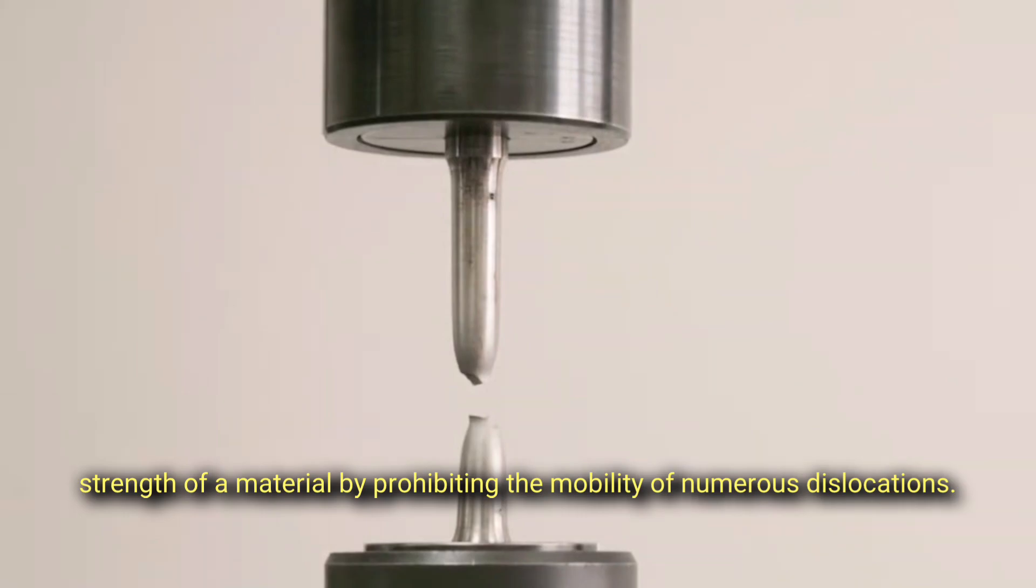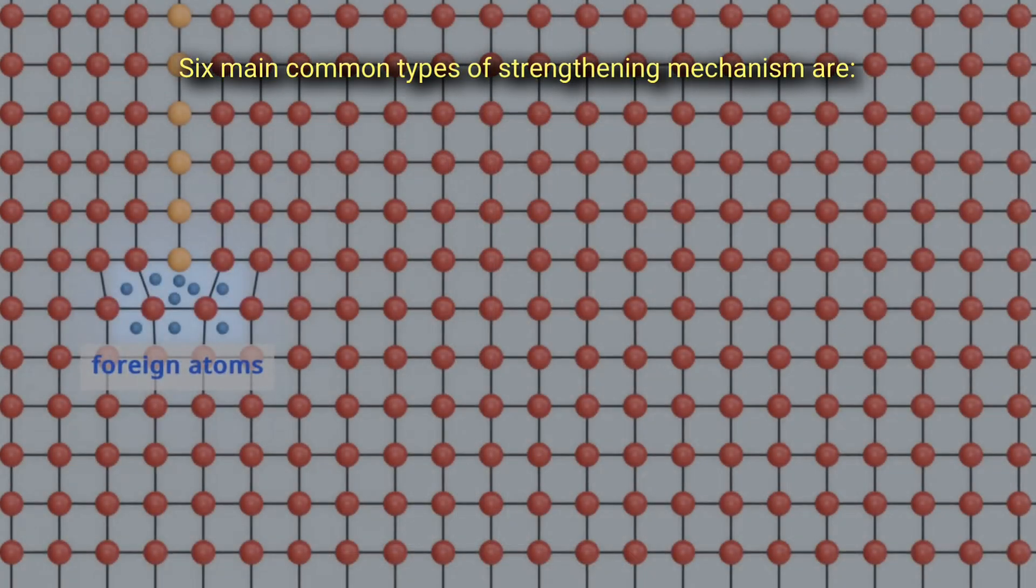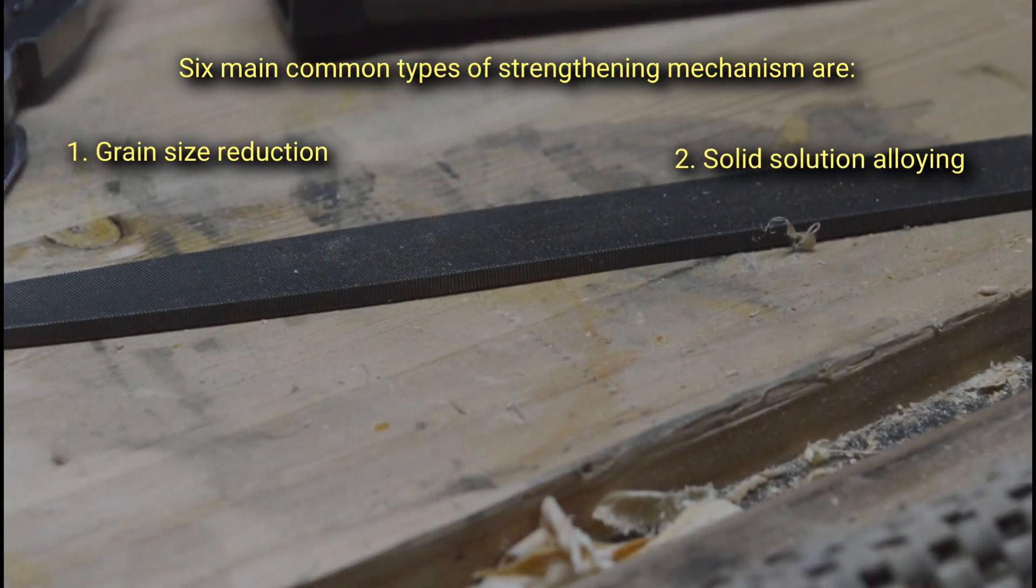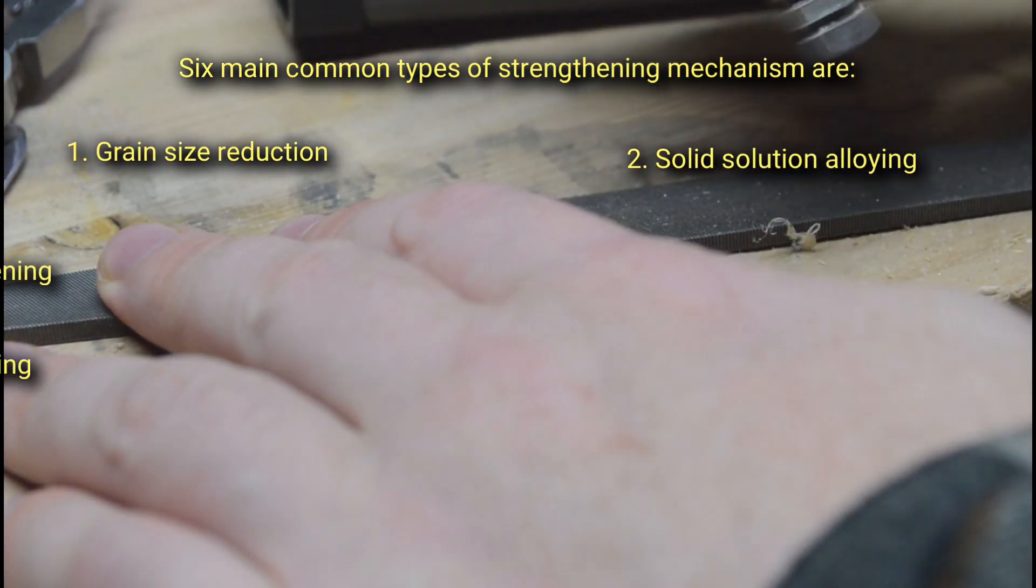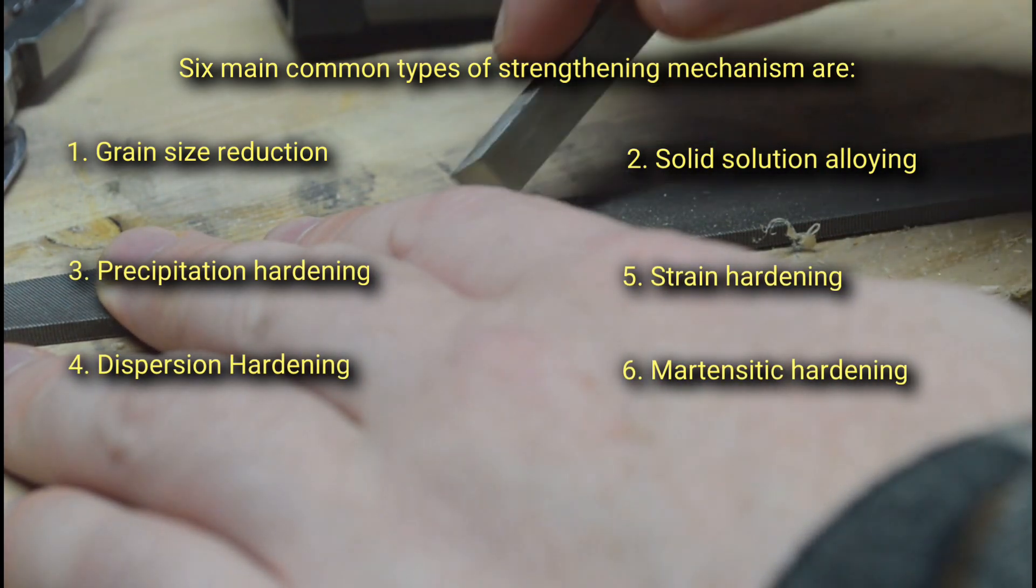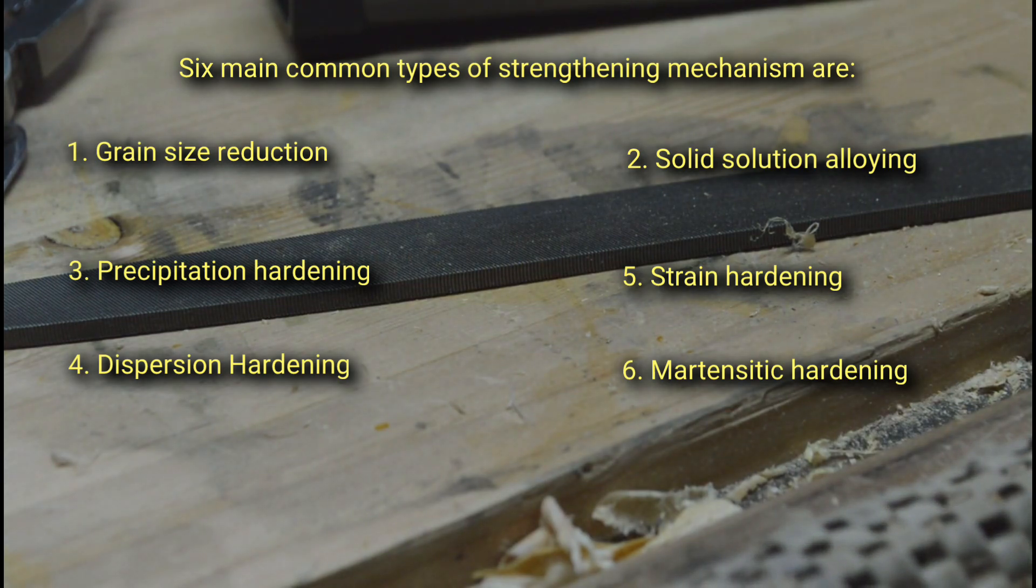The six main common types of strengthening mechanisms are: 1. Grain size reduction, 2. Solid solution alloying, 3. Precipitation hardening, 4. Dispersion hardening, 5. Strain hardening, 6. Martensitic hardening.